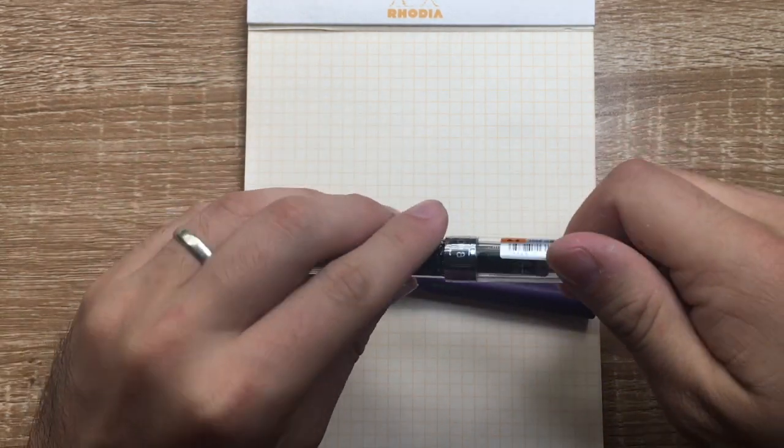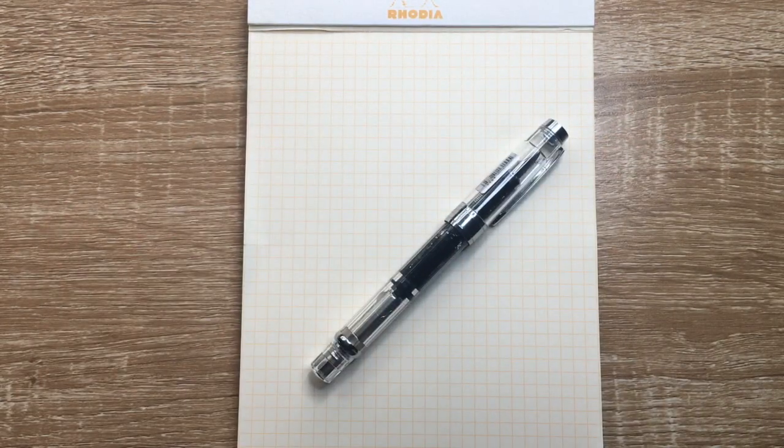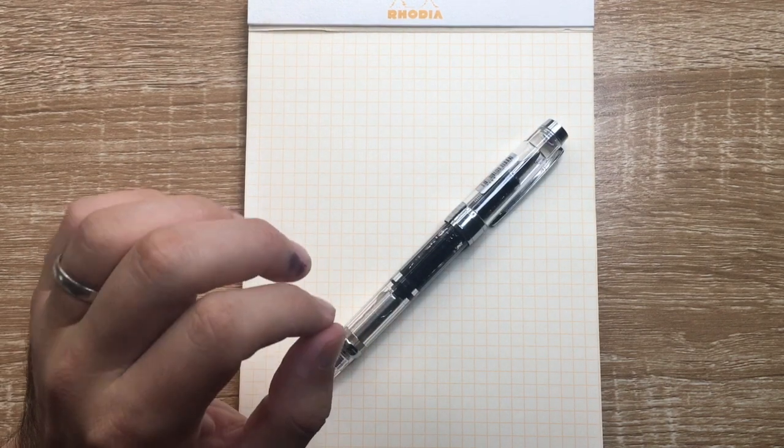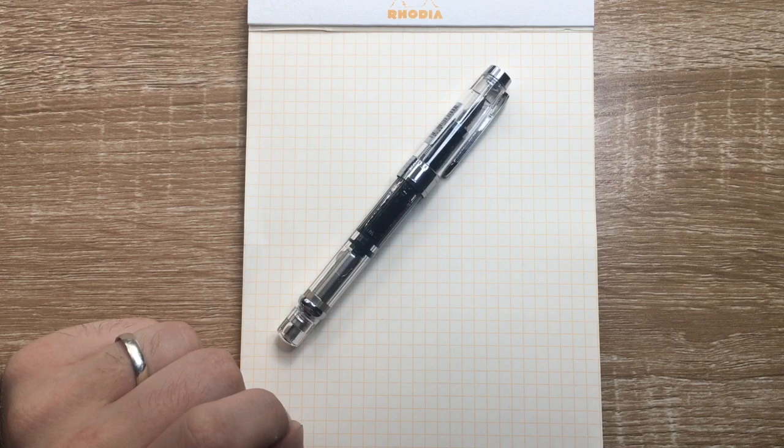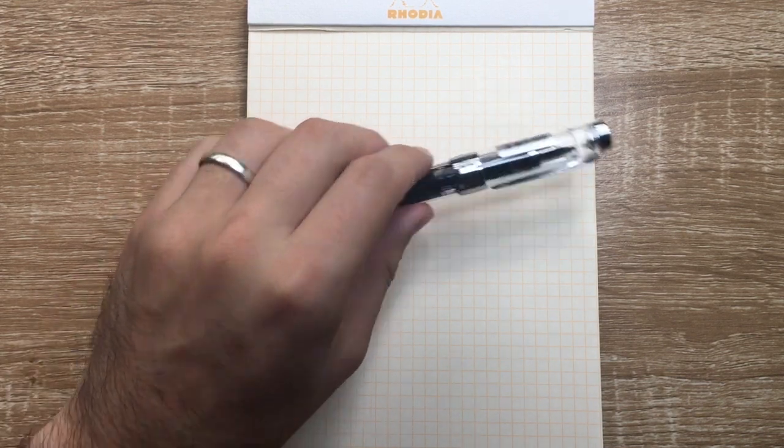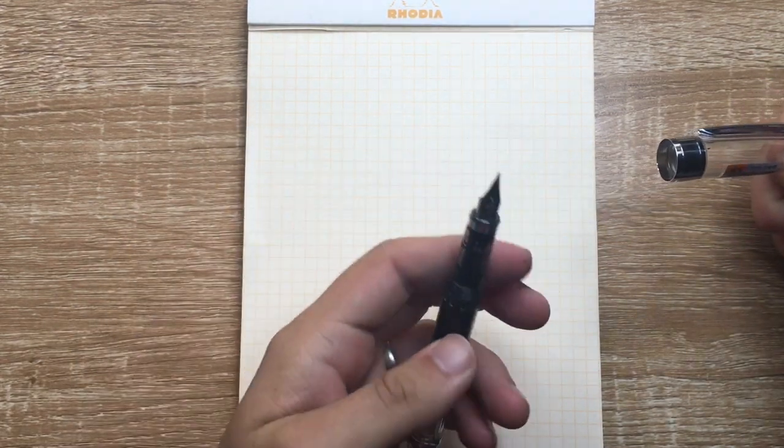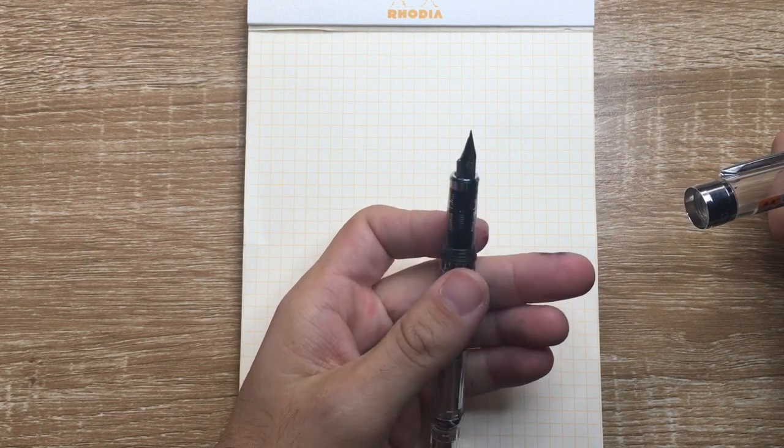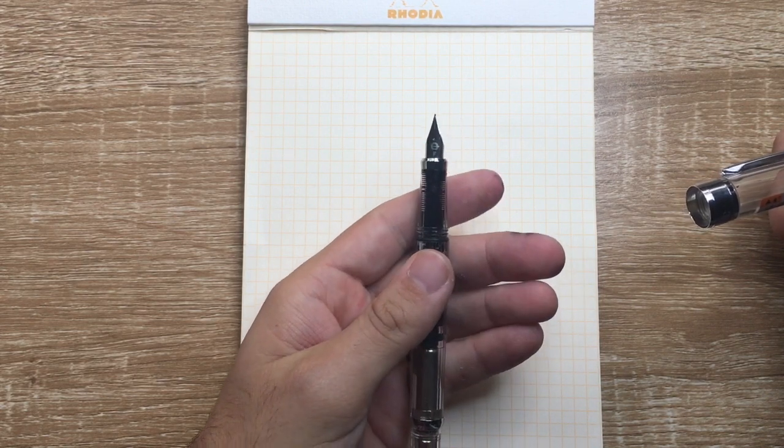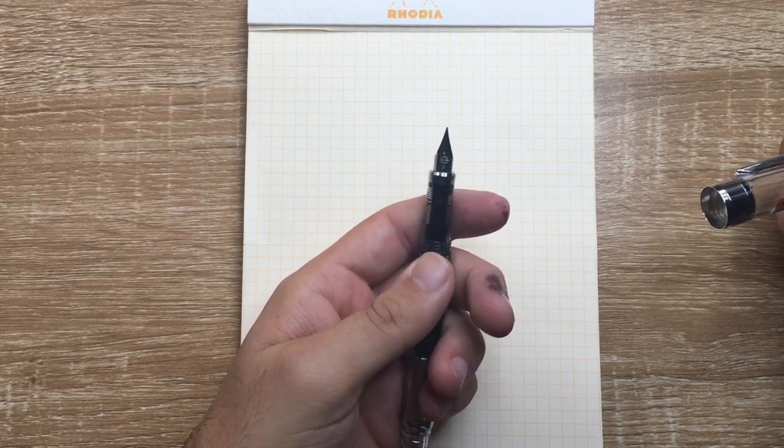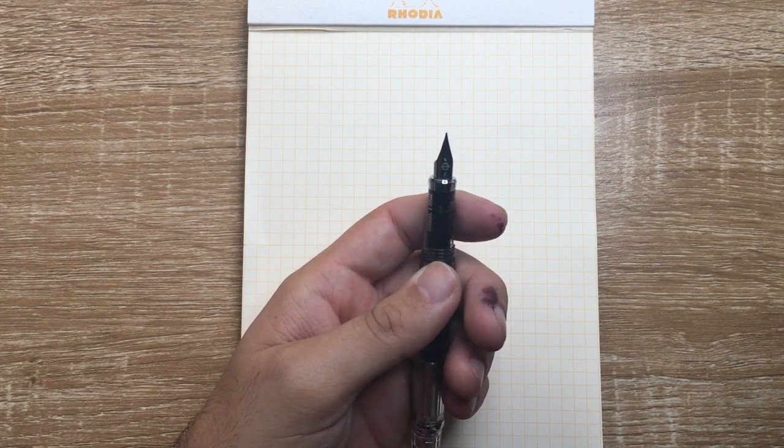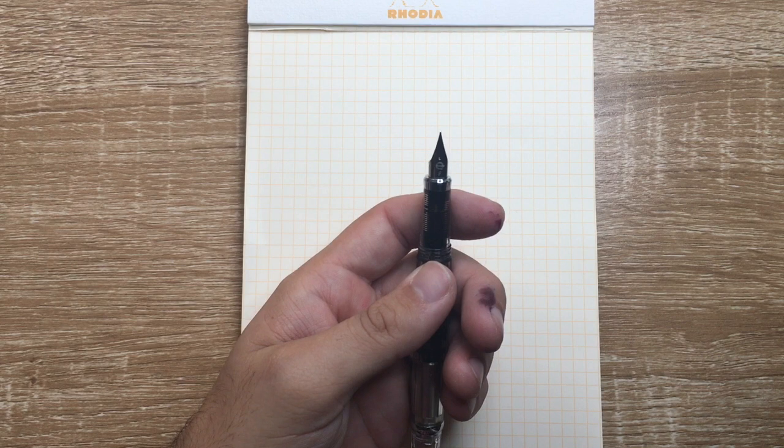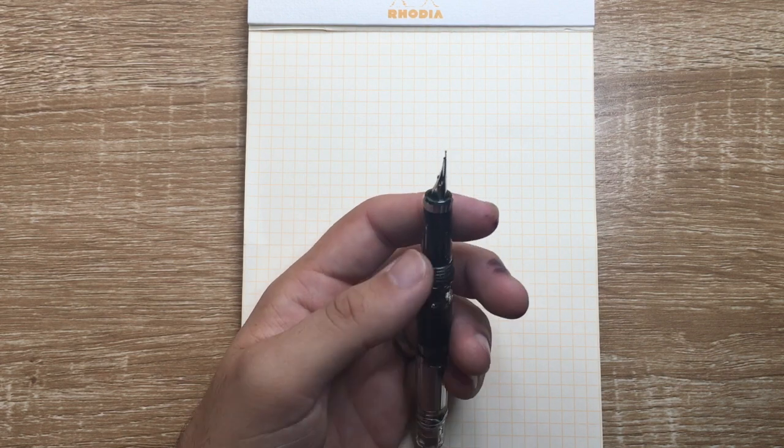So the pen comes primarily only in a fine nib which is a 0.5 millimeter. You can get other nibs online but it is a Lamy style nib and so you can in theory swap this out for a Lamy nib. Opening up a huge range of nibs and quite pleasant writing experience.